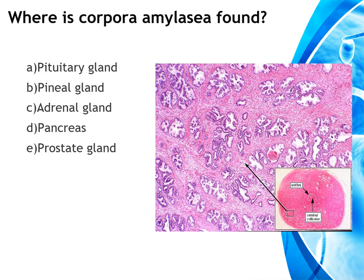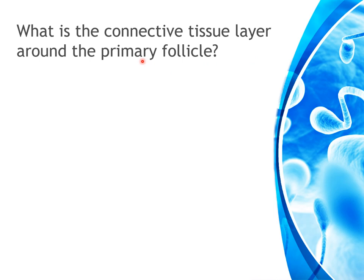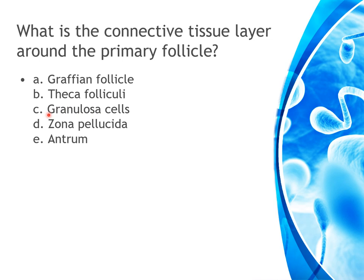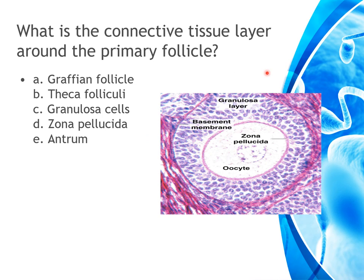What is the connective tissue layer around the primary follicle? Options are theca folliculi, Graafian follicle, granulosa cells, zona pellucida, and antrum. In the diagram of the primary follicle, the oocyte is covered by zona pellucida, surrounded by a layer of granulosa cells and their basement membrane; outer to the granulosa cells is the connective tissue layer called the theca folliculi. The answer is theca folliculi.